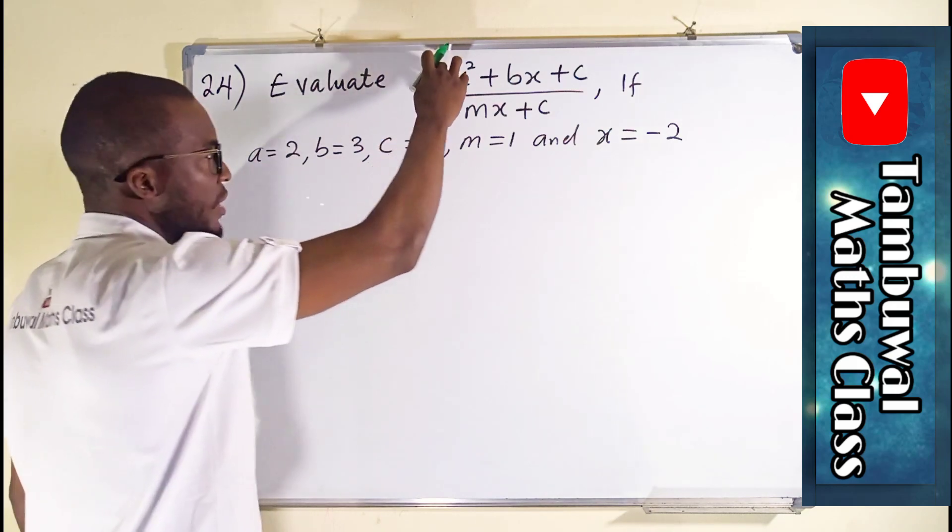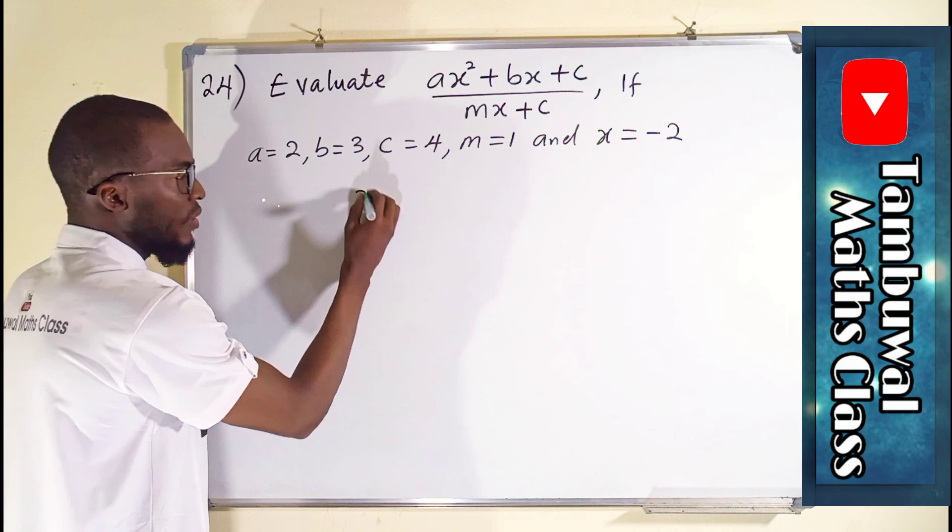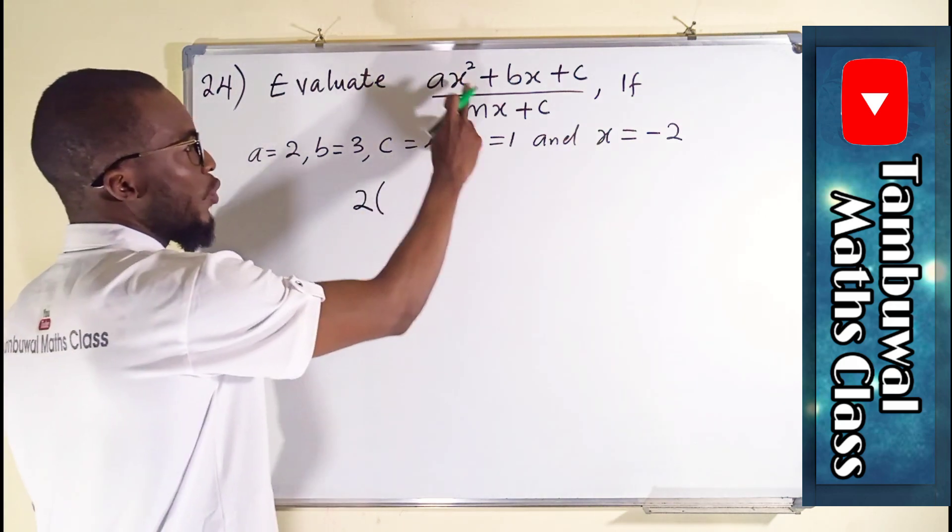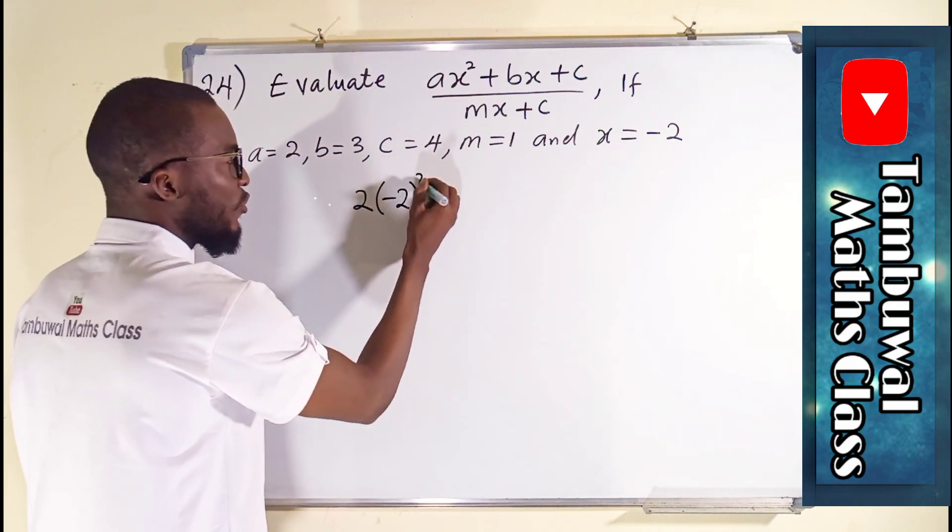From here we have a, and you can see our a here is 2, so we are going to substitute 2 multiply by x squared. And our x is negative 2, but since it is squared we have to square this.